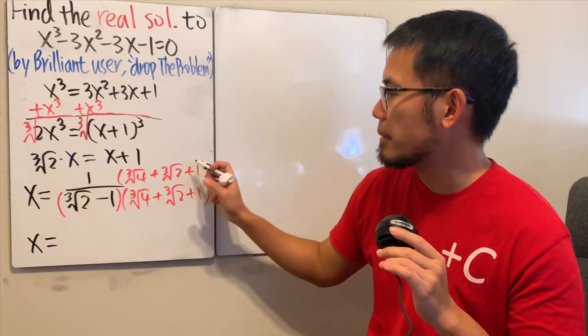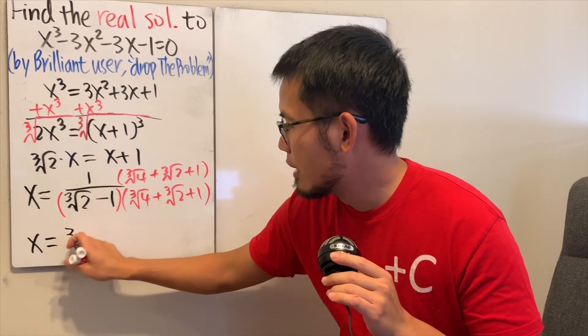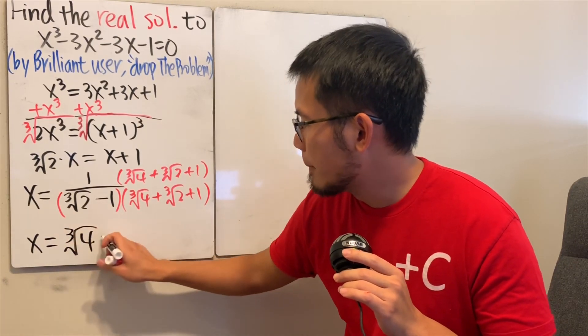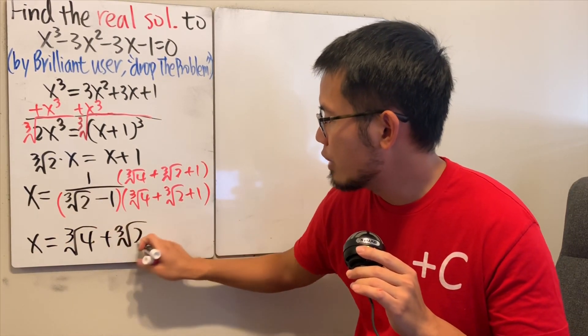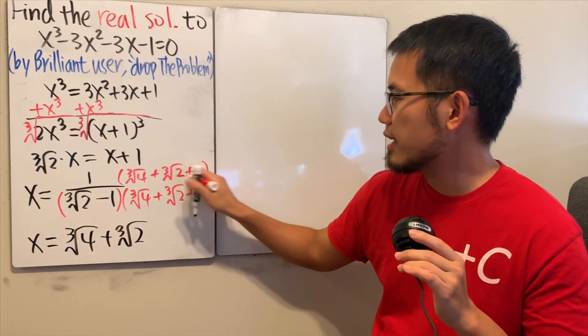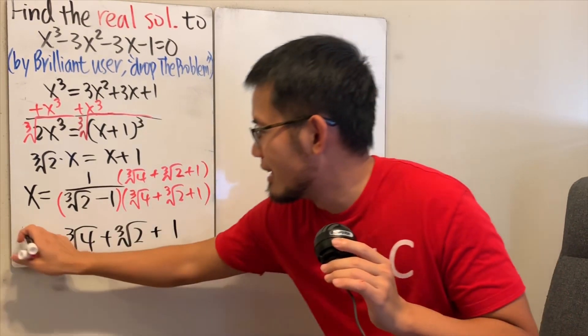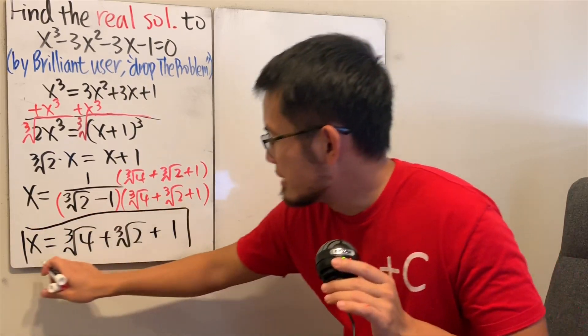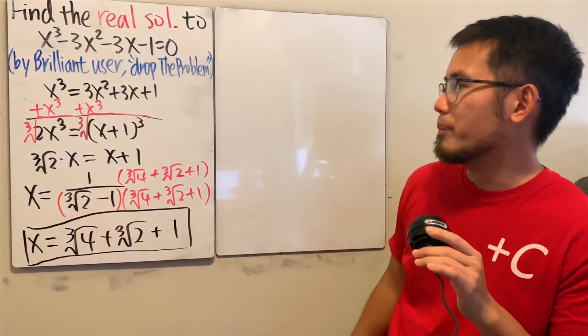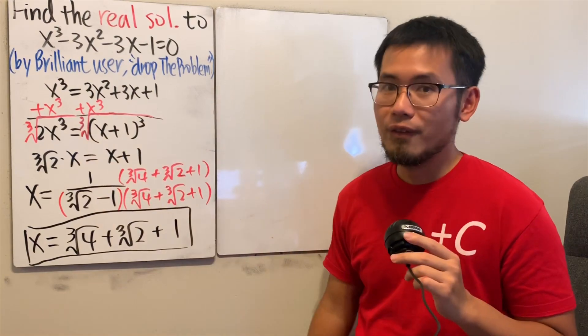And the top is just this times that, so we have ∛4 + ∛2 + 1. And if you would like, you can also write this as the cube root of 1, just to be cool. But let me just keep it as 1. Anyway, this right here is it, which is very cool. We just complete the cube. Very good, right?